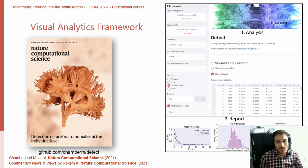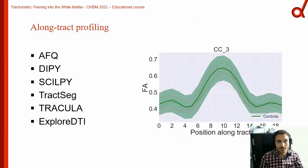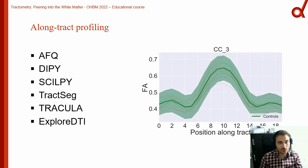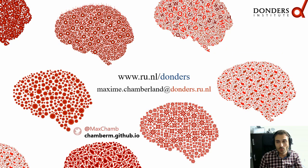I invite you to go and have a look and test it out. To generate these track profiles, here is a compiled list of tools you could use: automated fiber quantification, DIPY, SLIPY, TractSeg, Dracula, and Explore DTI — pick the one you prefer. Thank you for your attention. If you have any questions, feel free to reach out.